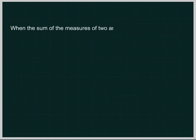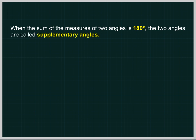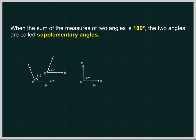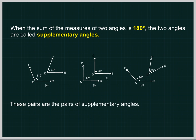When the sum of the measures of two angles is 180 degree, the two angles are called supplementary angles. Angle PQR equals 112 degree and Angle FDE equals 60 degree. Each of these pairs is a pair of supplementary angles.